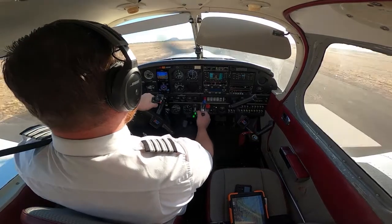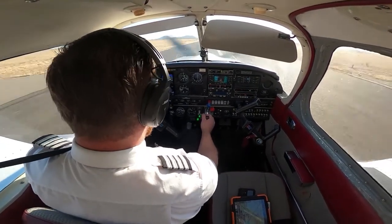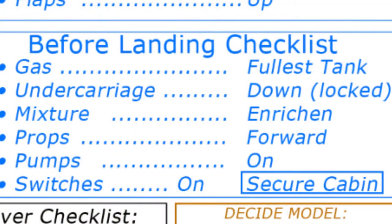At 500 feet AGL on landing, you do the GUMPPS checklist — G-U-M-P-P-S-S: gas (fuel selector to both, or left/right detent), undercarriage (gear down), mixture (full rich or appropriate), props (set forward), pumps (fuel pump on), switches (landing light on, taxi light on — whatever should be on is on, whatever should be off is off), and secure — verify the cabin is secured and seat belts are on.